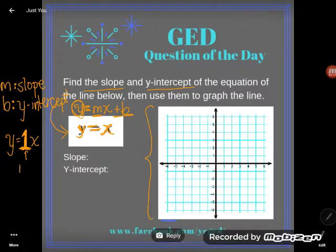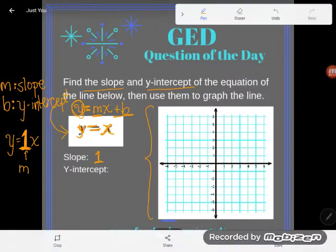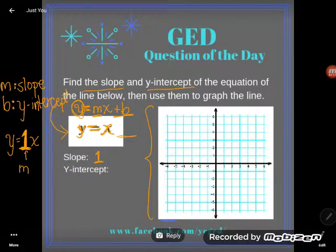And so my m, my slope in this case would be one. Now you might be wondering what is my y-intercept, what is my b? That appears to be missing in this equation as well.